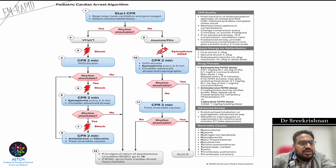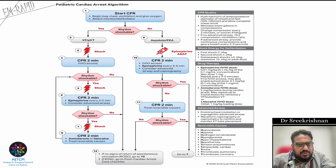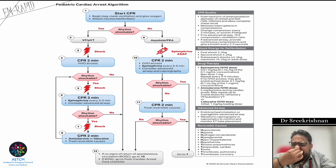Continue CPR, reassess after another two minutes. If rhythm remains shockable, deliver a third shock and now administer amiodarone or lidocaine. Amiodarone dose is 5 mg per kg body weight during cardiac arrest — can be repeated up to three doses. Lidocaine dose is 1 mg per kg body weight. Continue this cycle until ROSC is achieved or a decision is made to stop.